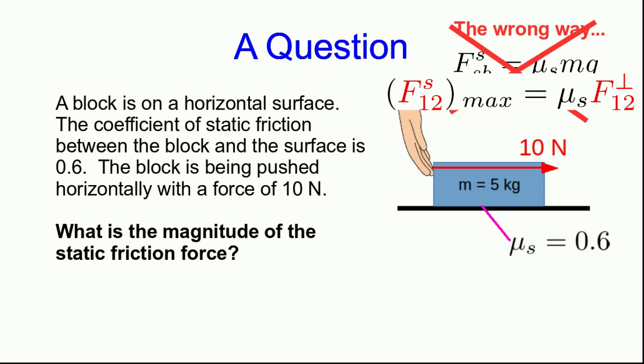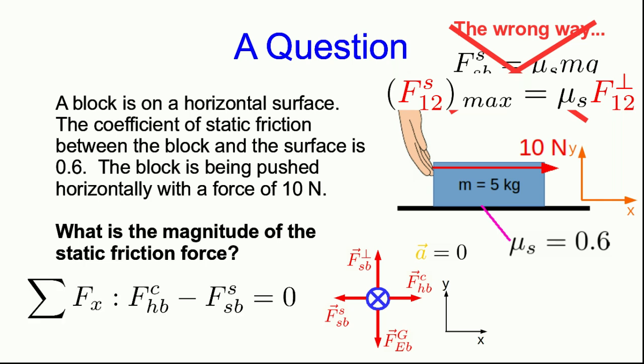So the correct way to do it is to realize, well, the block isn't sliding, its acceleration is zero, and so the vector sum of forces must be zero, and so the static friction must be exactly cancelling the 10 newton force that you're exerting to the right. It must be 10 newtons to the left. Or in other words, you could set up your axes, you could draw your free body diagram. Looking at it, you could do your x component of the equation of motion and just solve that for the force of static friction, and you see that its magnitude is equal to the magnitude of the force that your hand is exerting on the block.